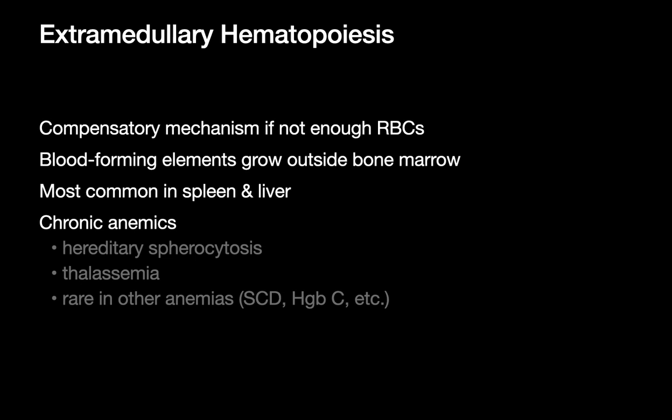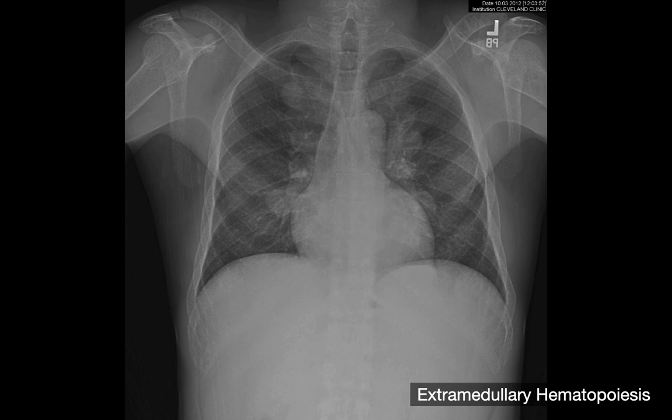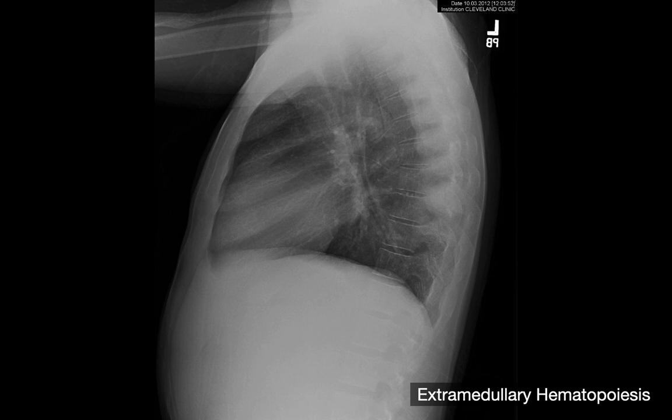Extramedullary hematopoiesis is another potential explanation for a vertebral posterior mediastinal mass. It occurs in the setting of chronic anemias as a compensatory mechanism when patients cannot produce enough red blood cells from normal marrow, with blood-forming elements developing outside the bone marrow — often in the spleen and liver, but sometimes in the posterior mediastinum. The imaging features are multiple bilateral posterior mediastinal masses of uniform attenuation, distributed longitudinally along the spine. A solitary extramedullary hematopoiesis mass is quite uncommon.